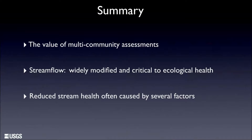The first take-home message: in understanding stream health and what harms it, it is vitally important to assess multiple biological communities, because each community has its own unique vulnerabilities to human-caused stressors. These communities also have vital roles in the ecosystem itself. When assessments are limited to a single biological community, they provide good information but are probably overlooking some factors causing poor health and underestimating the scope of the problem.